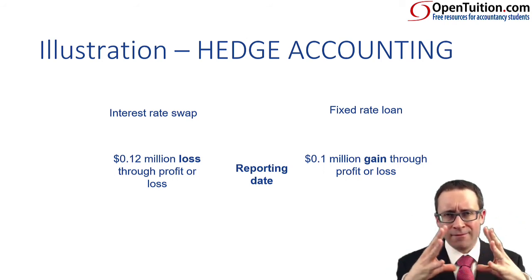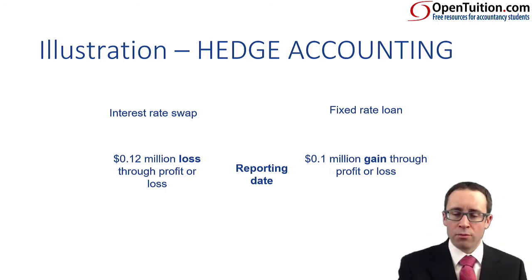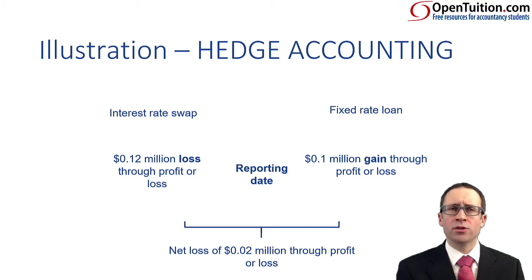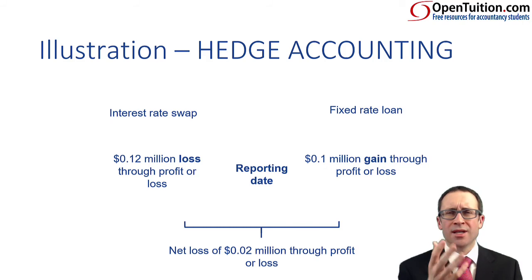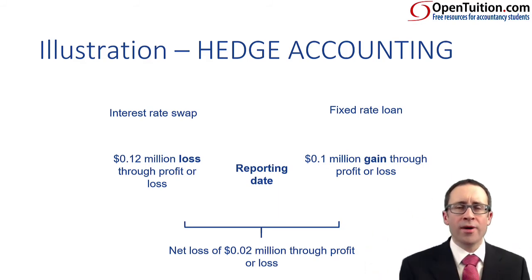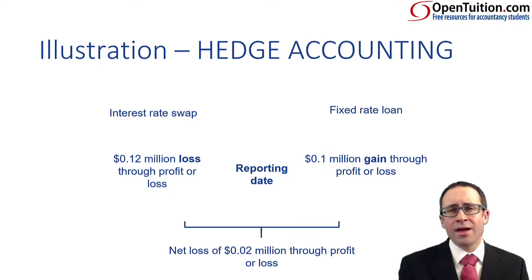You can see that we're matching them up in the same financial statements and in the same period. Both go through profit or loss, so you net them off: $0.1 million gain, $0.12 million loss — overall a net loss of $0.02 million through profit or loss. There are plenty of examples in textbooks, but most focus on inventory, so this example was used to broaden your understanding. Hopefully now you've got an idea of what hedging is, what hedge accounting is, and how to apply it to both cash flow and fair value hedges. In the exam, the question may be difficult, but you have every chance of success if you follow what we've gone through and covered here.